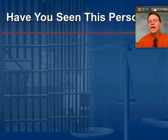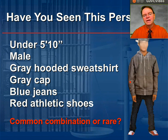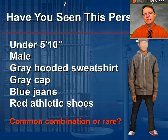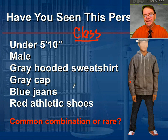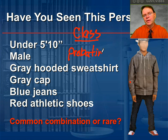Remember at the top of this segment I asked: have you seen this person? Under 5'10", male, gray hooded sweatshirt, gray cap, blue jeans, red athletic shoes — is this combination common or rare? You're probably thinking these are all class evidence, and you're correct. There are many people under 5'10", many males, many people with gray hoodies, gray caps, blue jeans, and red athletic shoes. However, could this combination trace back to one source? The more class evidence we have, the more it strengthens what we call the probative value of that evidence — its ability to prove something.